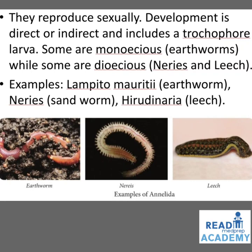Annelids reproduce sexually. Development is direct or indirect and includes a trochophore larva. Some are monoecious like earthworms, while some are dioecious like Nereis and leech. Examples: Lampito moretii, earthworm; Nereis, called the sandworm; and Hirudinaria, called the leech.